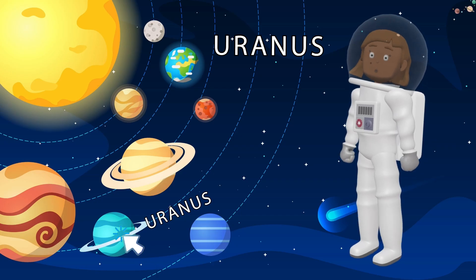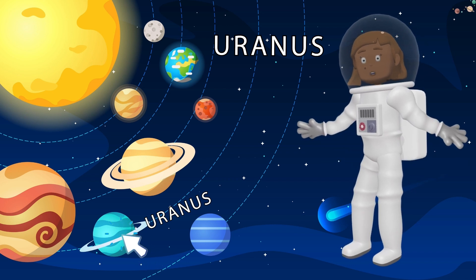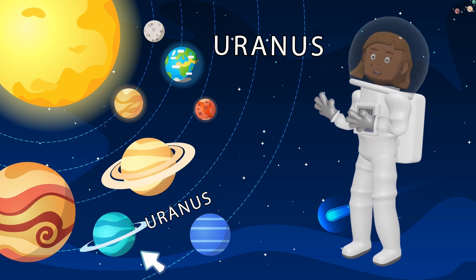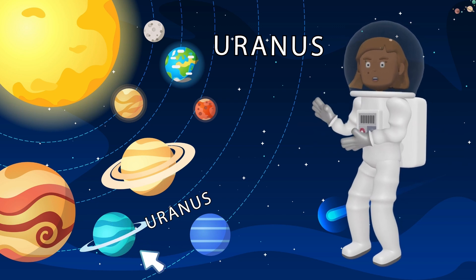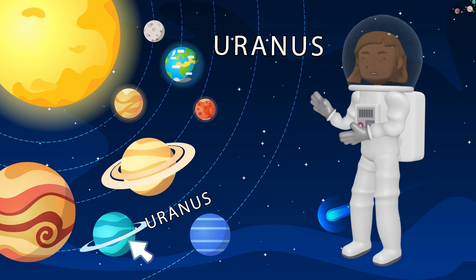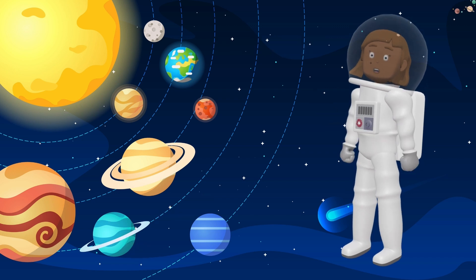Now we're heading to Uranus! Uranus is a unique planet because it spins on its side, almost like it's rolling around the sun! This tilt causes extreme seasons that last for over 20 years each! Uranus is also known for its beautiful blue-green color, which comes from the methane in its atmosphere. And just like Saturn, Uranus has rings, although they're much fainter! Imagine seeing a sideways planet with rings! How cool is that?